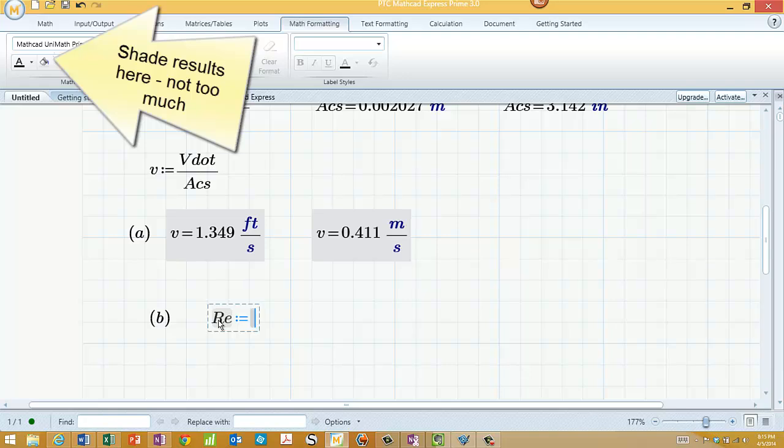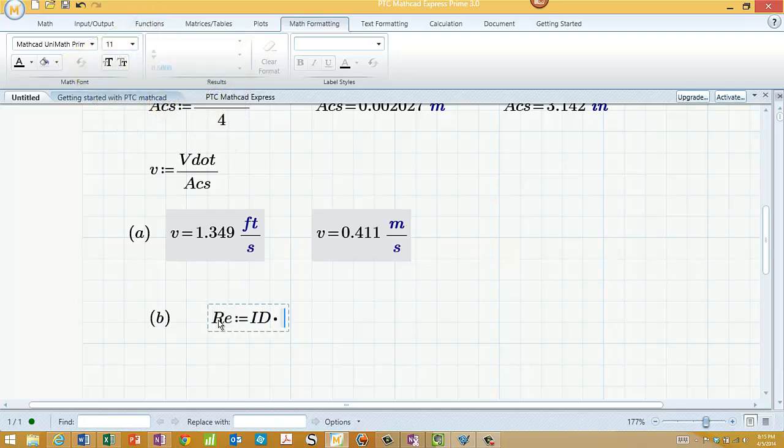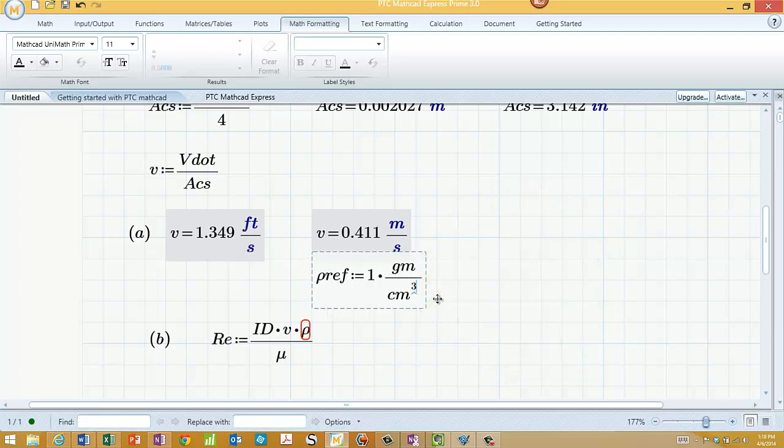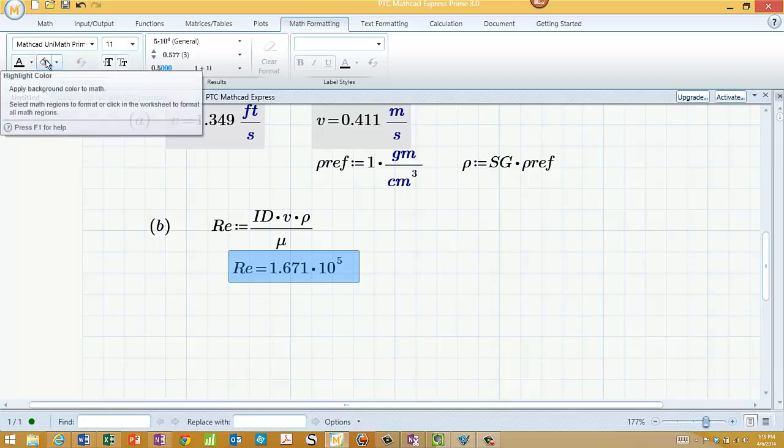And now we call this RE. Assign that to ID times velocity times rho. Turns rho red, or puts a red underline. That means that's an undefined variable. I have not defined rho yet. We'll define rho ref, so R, control G, ref, as 1 times gram per centimeter cubed. Then we can just say that rho, again, R, control G, equals the specific gravity times rho ref, R, control G, ref. Just put it in, shade it a bit.